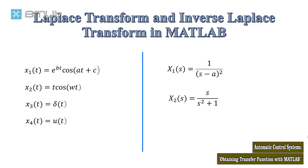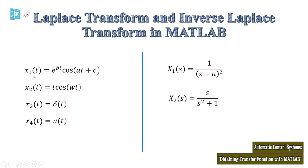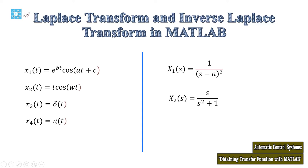After talking about the transfer functions in the previous lessons, we investigated the Laplace transform and inverse Laplace transform, and we saw that this transform is very important and we use it in analyzing the control system. We have four functions: e to the power of bt times cosine of at plus c as the first function; x2 of t is t times cosine of wt; the third function is the impulse signal; and x4 of t is the step function.